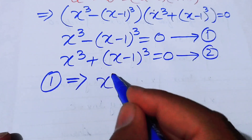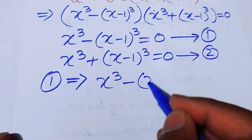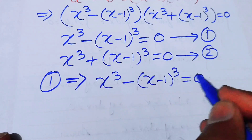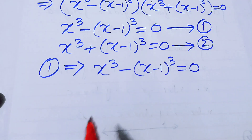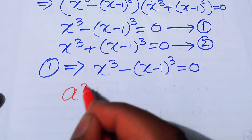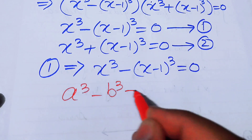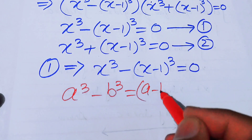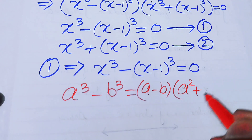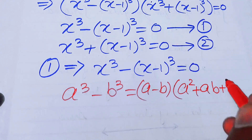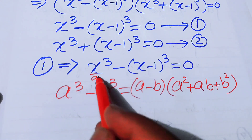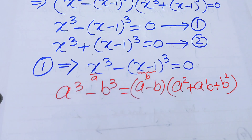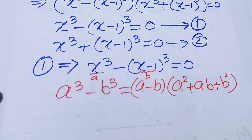Now we solve equation 1: x³ minus (x−1)³ equals 0. We apply the cubic identity a³ minus b³ equals (a minus b)(a² plus ab plus b²), with a = x and b = x−1.